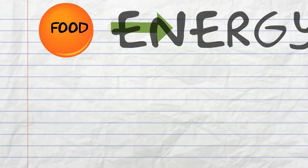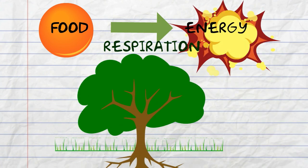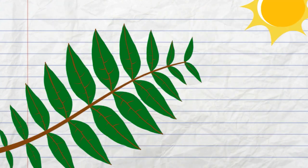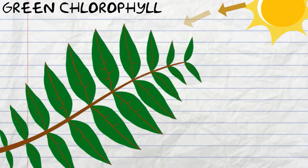Food is converted into energy by a process called respiration. Energy is needed to keep the plant alive. The leaf contains a green substance called chlorophyll which traps light energy from the sun to make plant food.